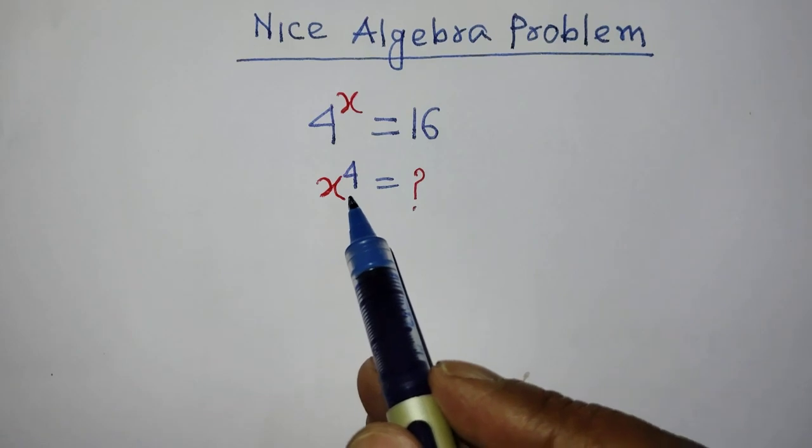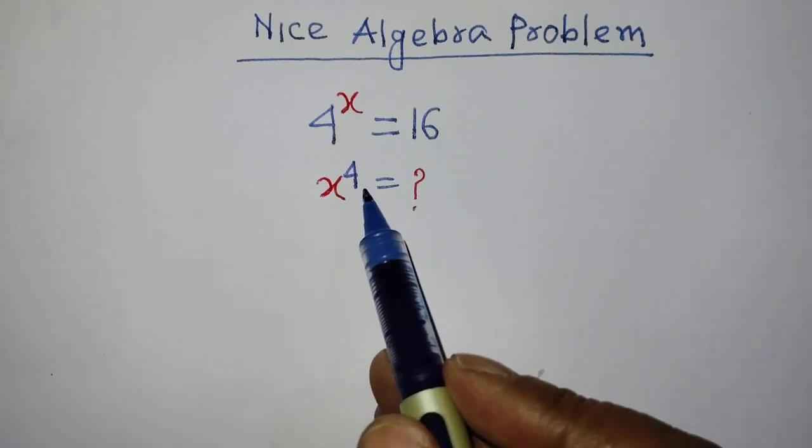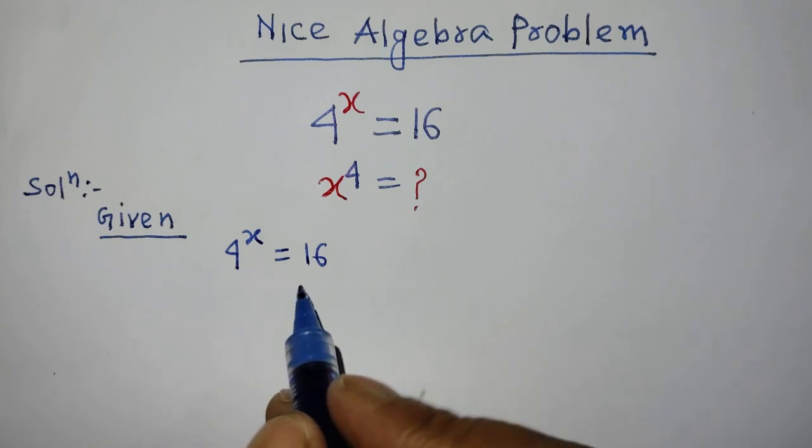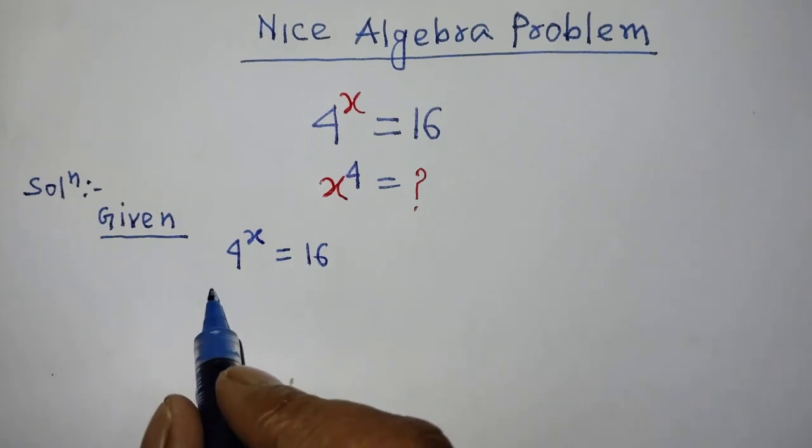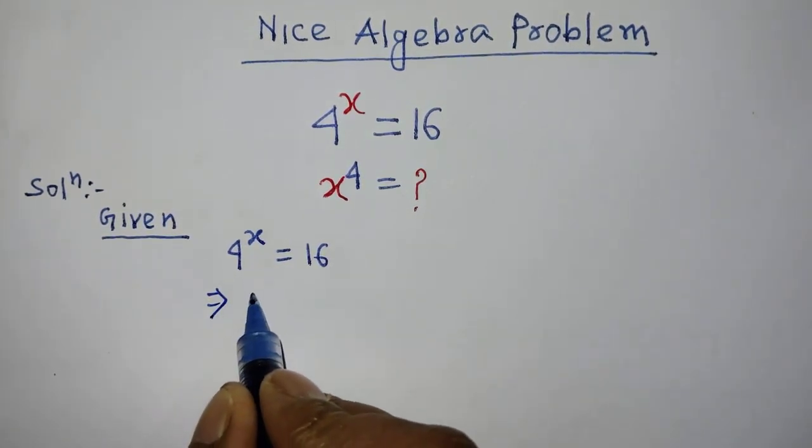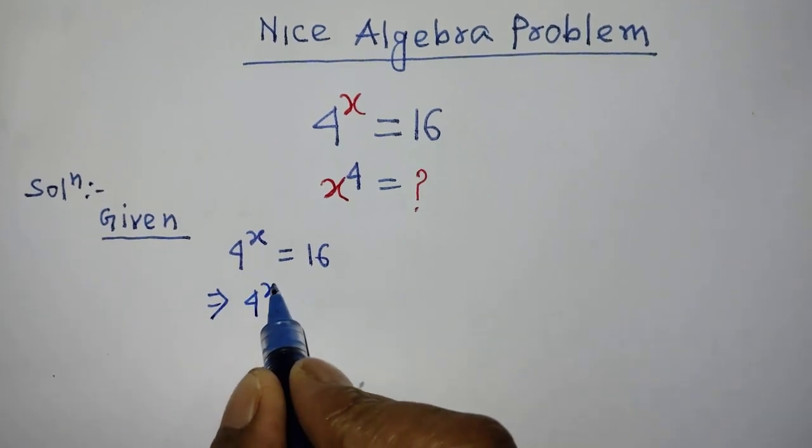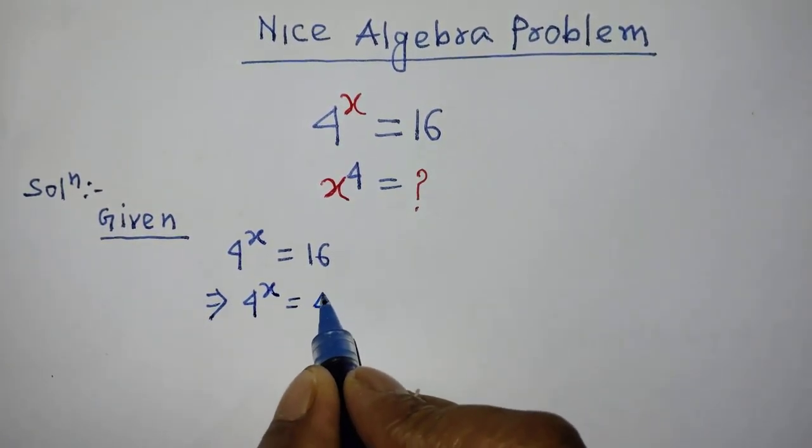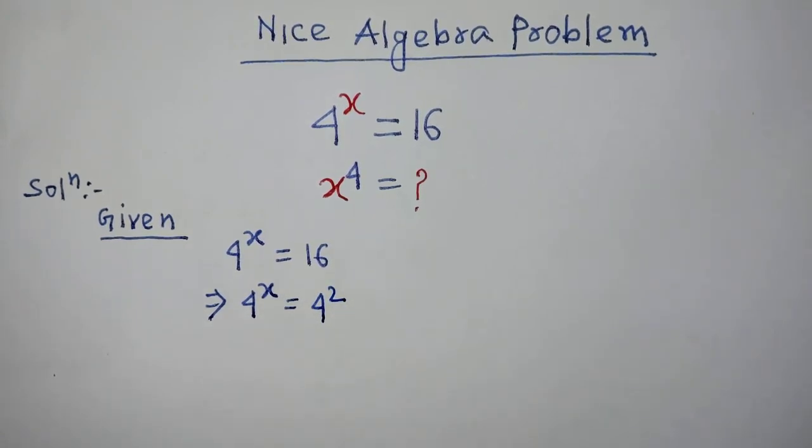In the first step of the solution, it will be 4 to the power x is equal to 4 to the power 2. In this equation, on both sides in the place of base, both are same.